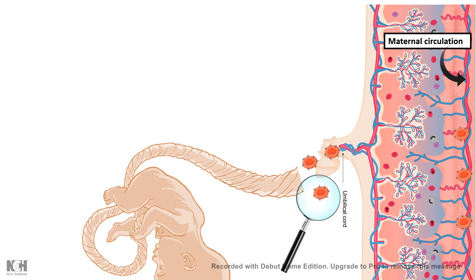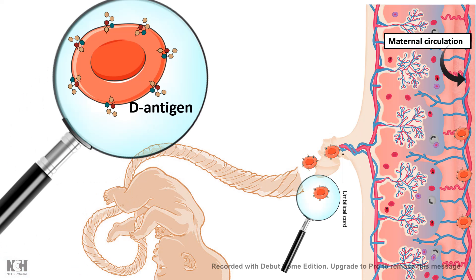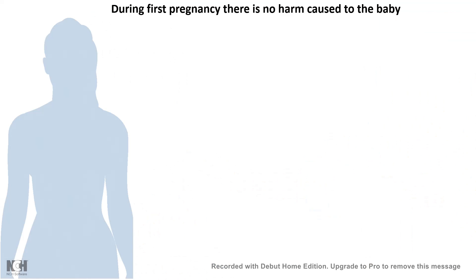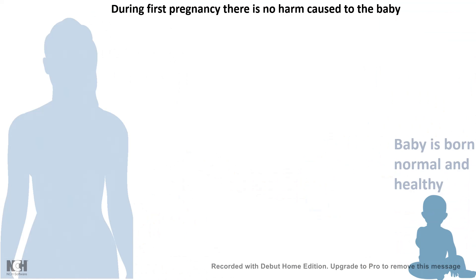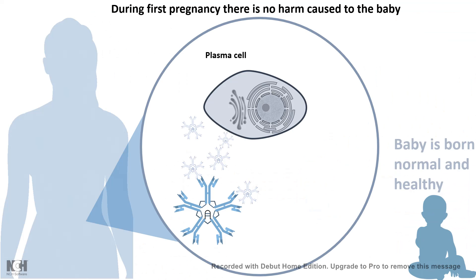Inside the mother's body, anti-D antibodies are produced. In the first pregnancy, even though antibodies are produced, the baby is already born and nothing harmful happens. Plasma cells secrete IgM against the D antigen, and memory B cells are also produced which can later secrete IgG. Because IgM is pentameric and very large, it is hard for IgM to cross the placenta — so it poses no harm during the first pregnancy. It is the IgG antibodies that are dangerous.